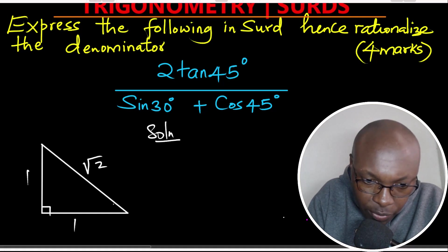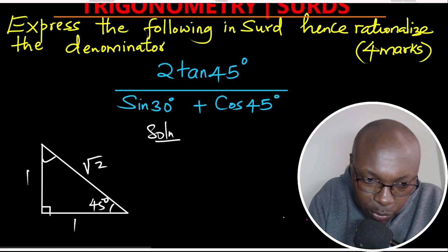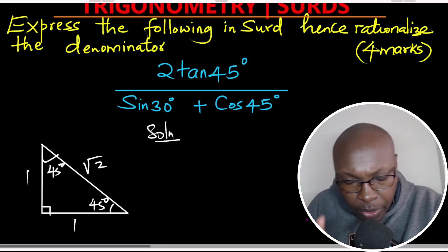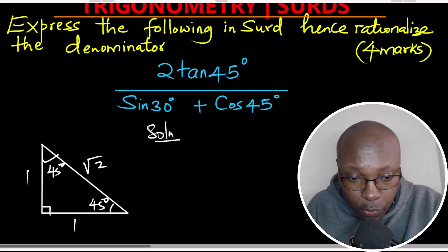Using Pythagoras' theorem, the hypotenuse will be root of 2. The two angles each measure 45 degrees. This is where we shall get tangent of 45 and cosine of 45.